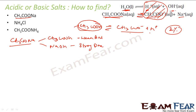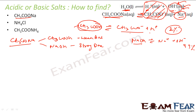So instead of H⁺ we get CH3COOH, and what remains is Na⁺ and OH⁻. Since NaOH is a very strong base, Na⁺ and OH⁻ will never recombine to form NaOH. So the solution ends up with a lot of OH⁻ ions, making it basic. CH3COONa is therefore a basic salt — the stronger base component dominates.